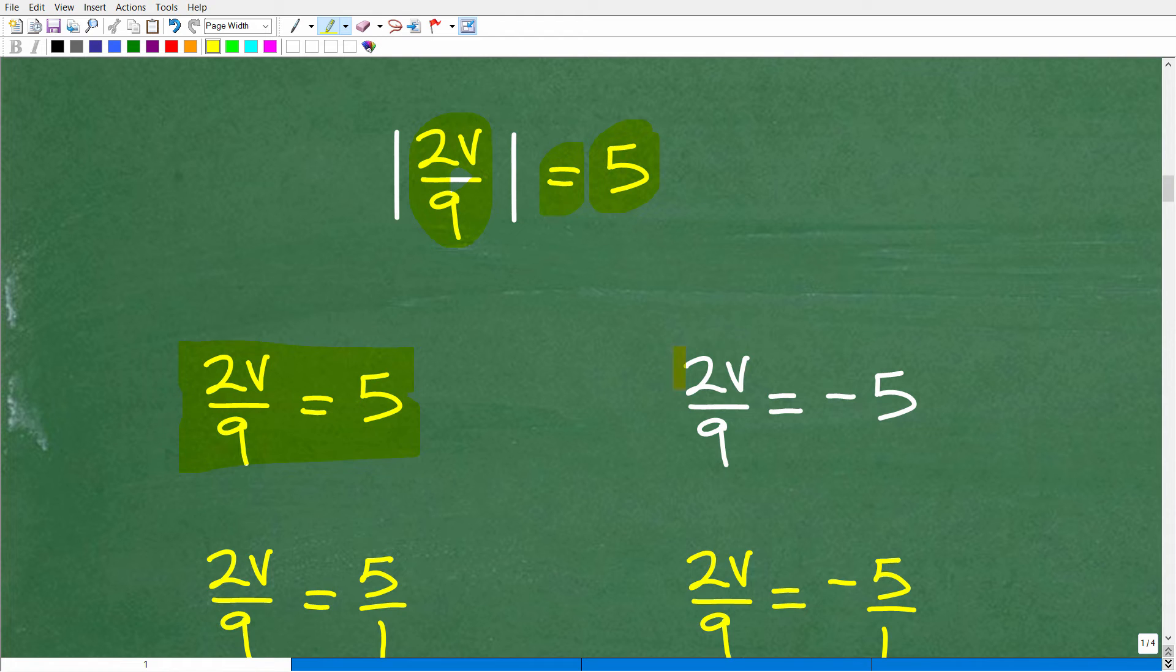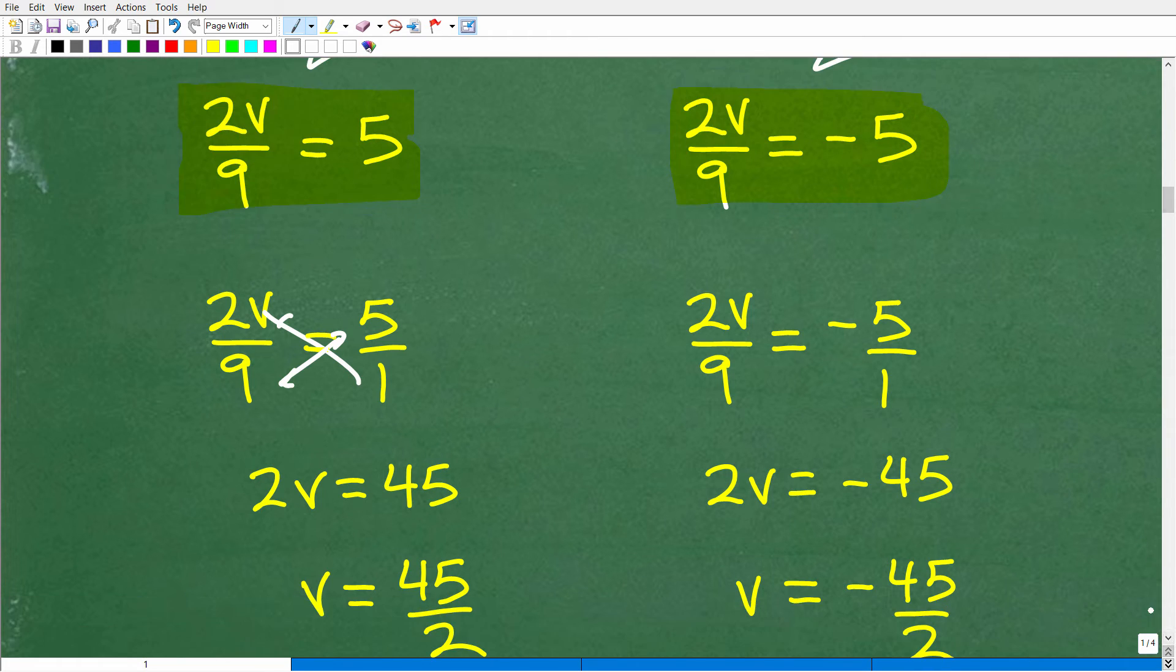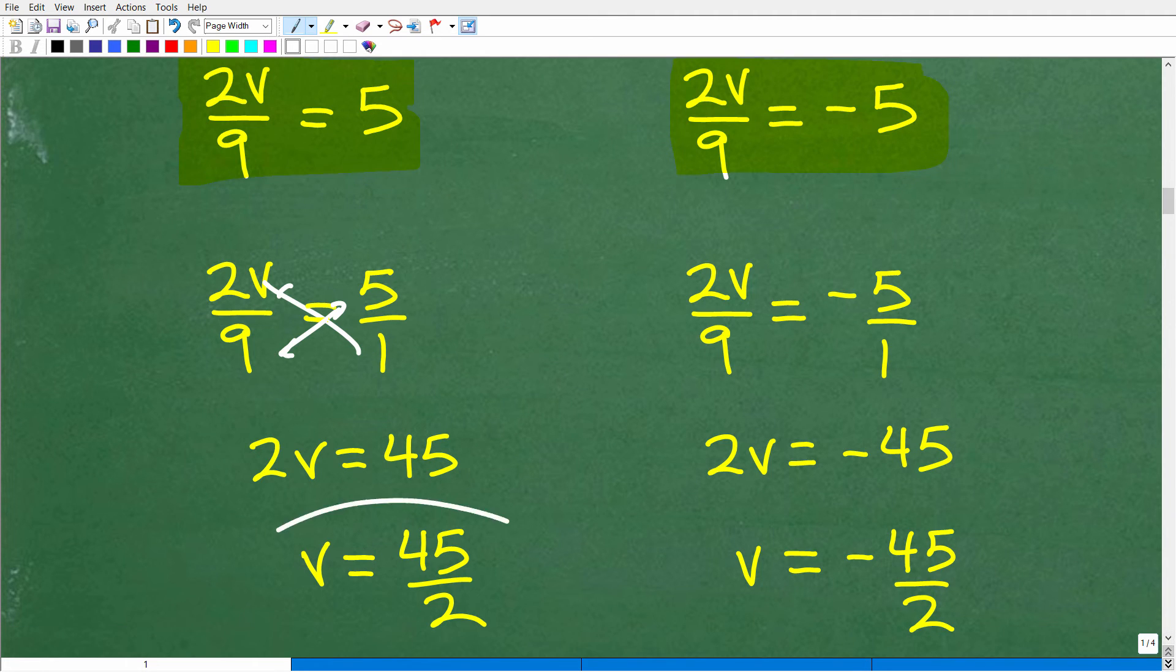So set up two equations. This is how you're going to get your two solutions. 2v over 9 is equal to 5, or 2v over 9 is equal to negative 5. And then you're going to resolve those respective equations. Hopefully you have basic algebra skills here. So 2v over 9, we can write that as being equal to 5 or 5 over 1 and just simply use the cross product to solve this. There's other ways you can approach this. We have 2v is equal to 45, V is equal to 45 over 2.